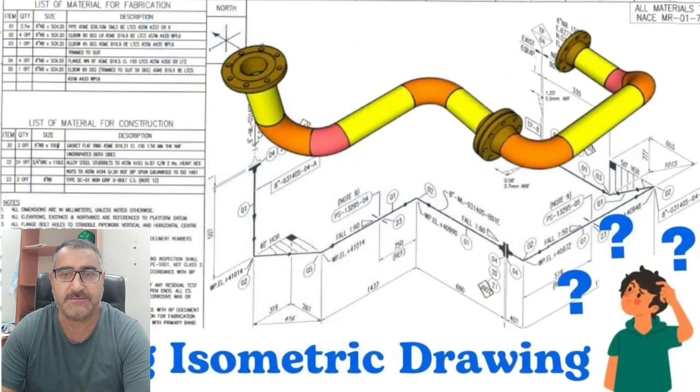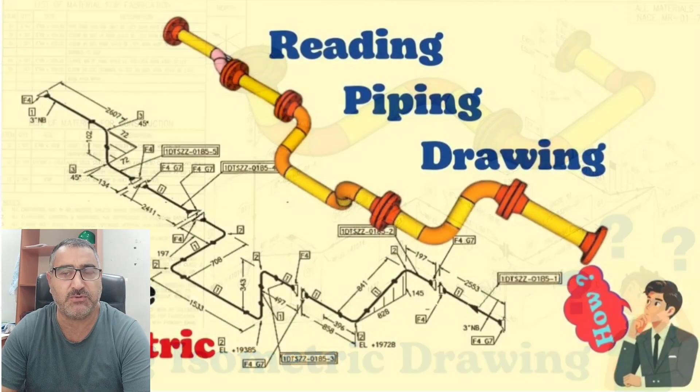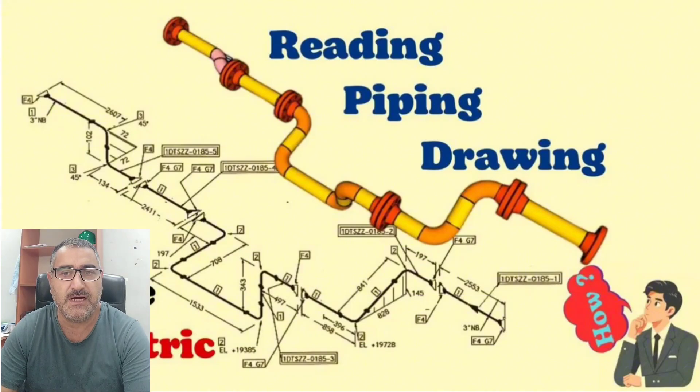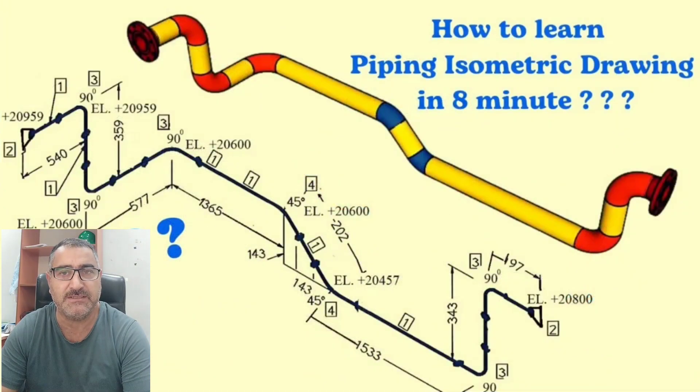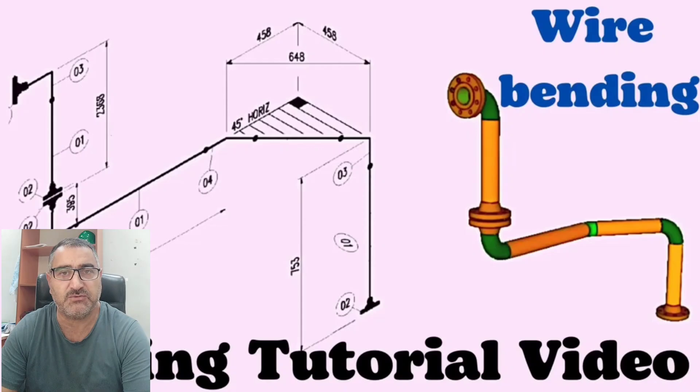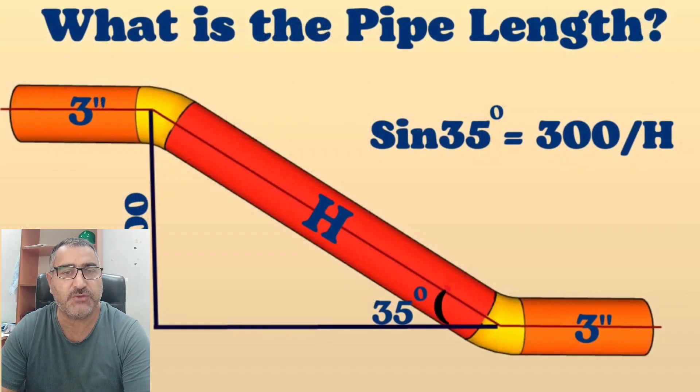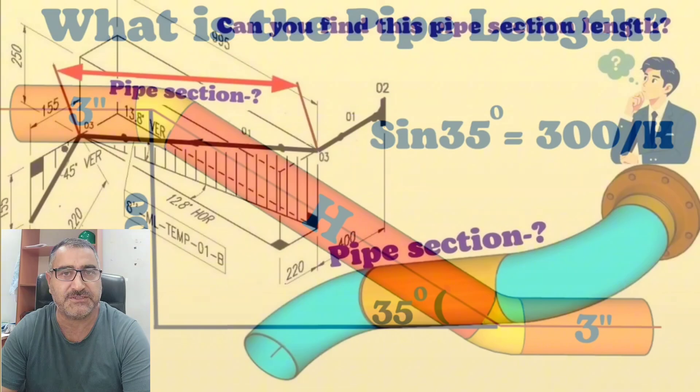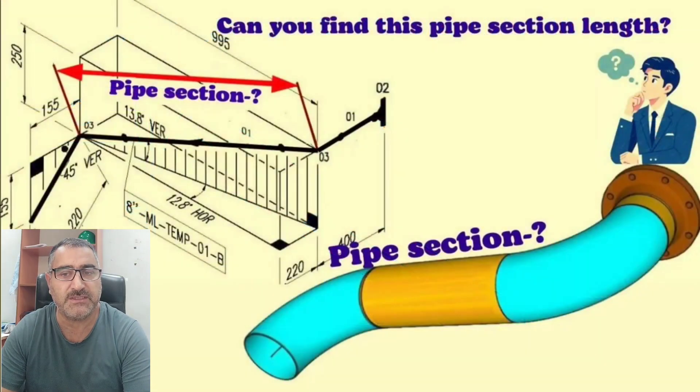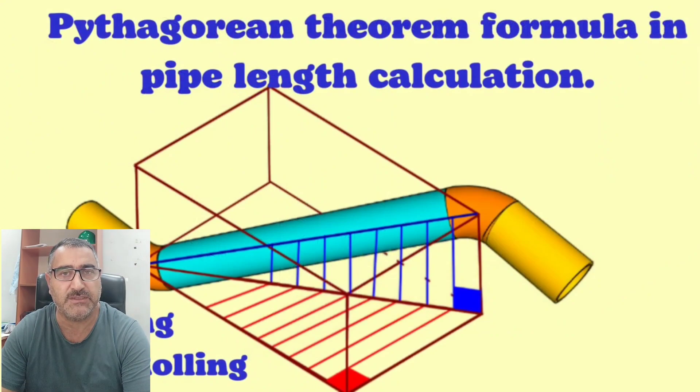Piping Isometric Drawing Reading, Piping Isometric Drawings with Easy Method, How to Learn Pipe Isometric Drawing Quickly, Piping Tutorial Wire Bending for Isometric Drawing, What is the Pipe Length, How to Find the Length of the Pipe Section, and Pythagorean Theorem Formula in Pipe Length Calculation.